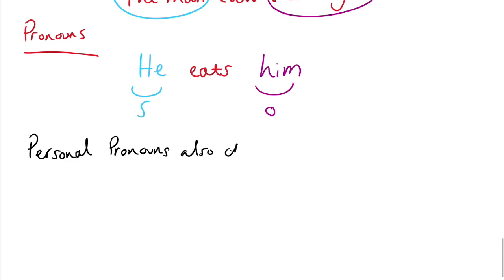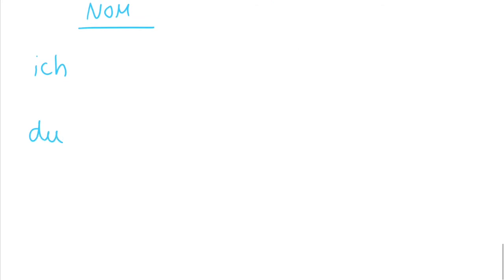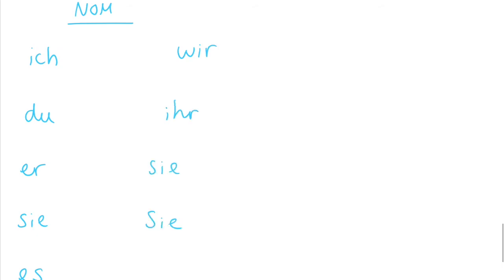Play around with this for a bit yourself. And notice that in German your personal pronouns also change. So in the nominative we have ich, I. Du, you. Er, he. Sie, she. Es, it. Wir, we. Ihr, you. Sie, they. Sie, you, plural, formal.